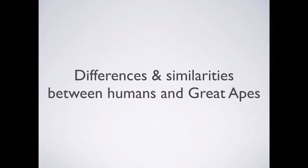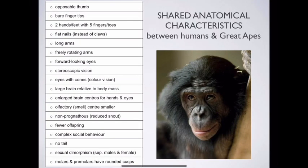Second in our series on human evolution, we're going to be talking about the differences and similarities between humans and the great apes. When we look at the great apes — your chimpanzees, your bonobos, your gorillas — it's obvious that we share a number of characteristics with them, and that's because we share a common ancestor.